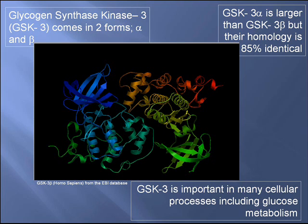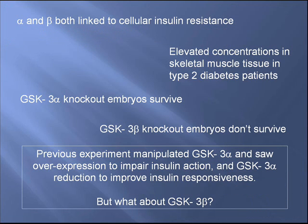GSK3 has been linked to many cellular roles, but today we're focusing on glucose metabolism and its effect on insulin resistance. Both the alpha and beta forms have been linked to insulin resistance mainly through experimentation with the use of inhibitors, which are non-specific.